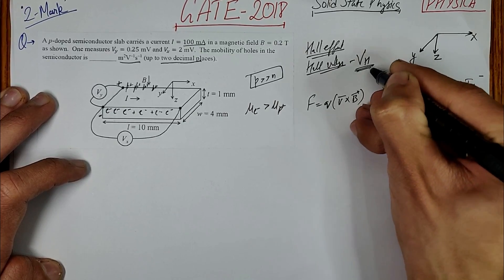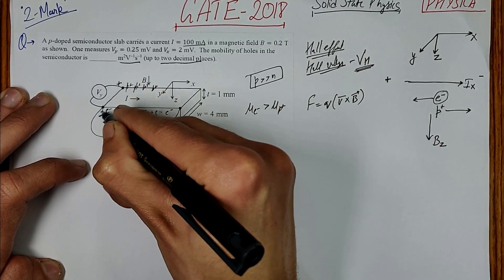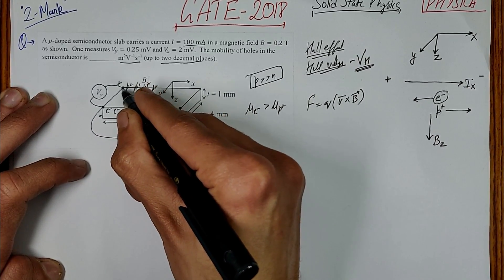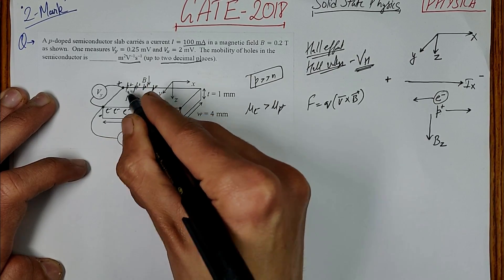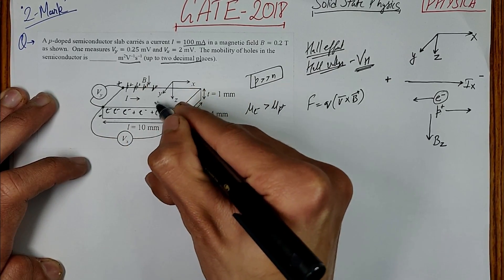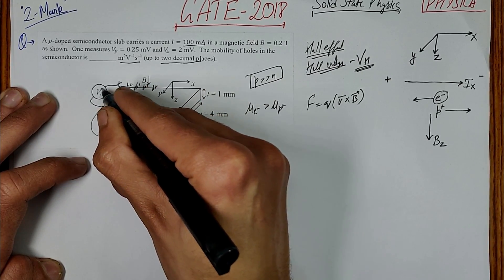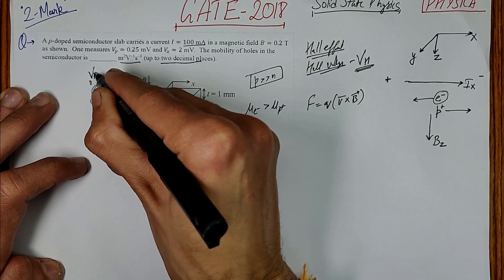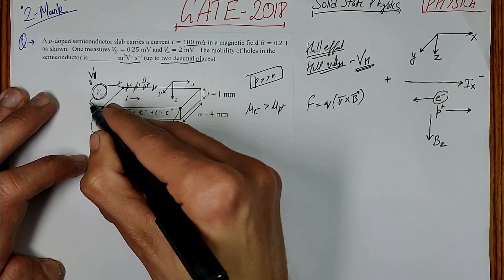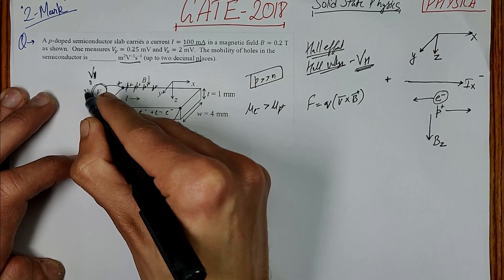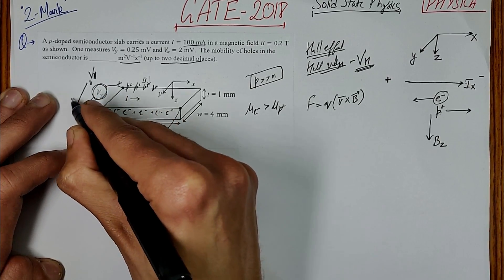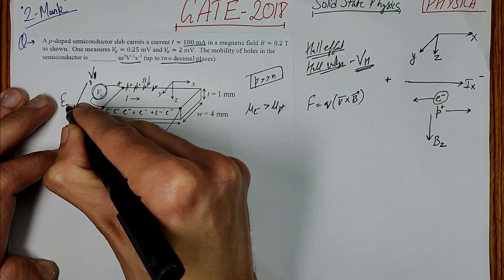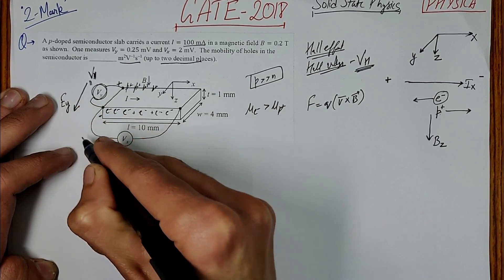This Hall voltage, sometimes denoted Vh, will appear in the y-direction (outward direction). So Vy is the Hall voltage Vh. Due to this, an electric field Ey also develops in the y-direction, from positive to negative.